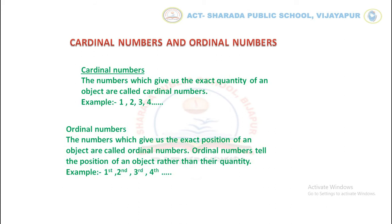Ordinal Numbers: the numbers which give us the exact position of an object are called Ordinal Numbers. Ordinal Numbers tell us the position of an object rather than their quantity. For example, 1st, 2nd, 3rd, 4th, etc.